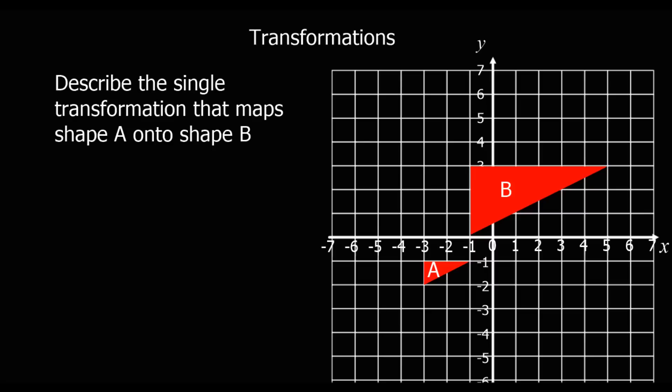This question says, describe the single transformation that maps shape A onto shape B. So what's happened to shape A to make it shape B? So we can see it's an enlargement. What's the scale factor?